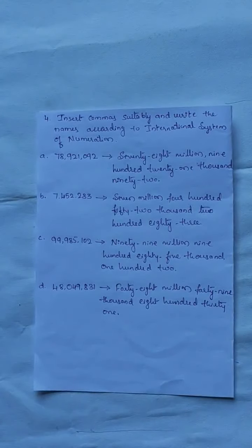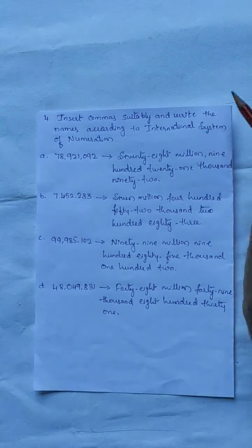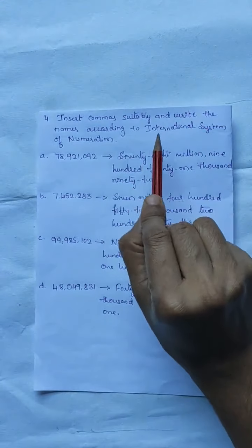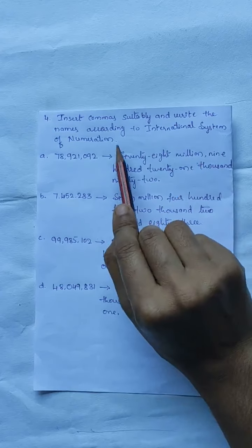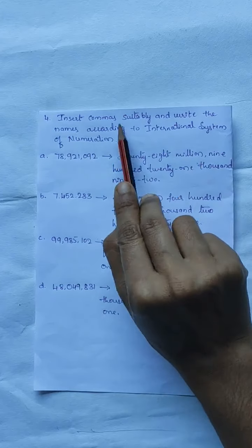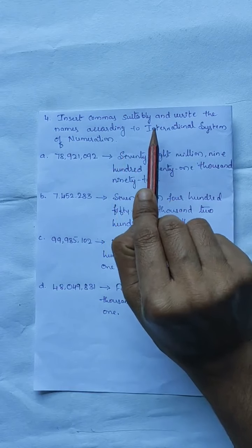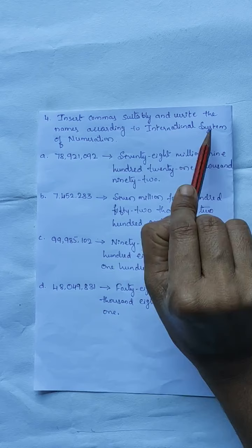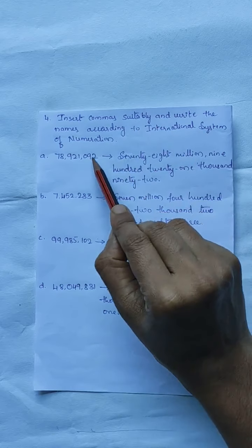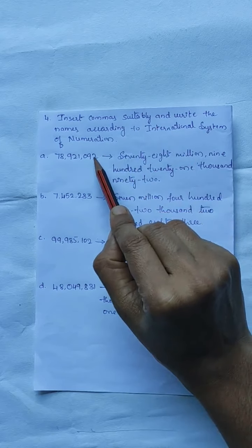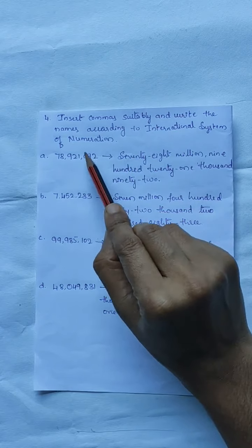Fourth mean: insert commas suitably and write the names according to the International System of Numeration. Insert commas suitably means we have to insert the comma according to the International System of Numeration. For that, we have to put the commas after every three digits.